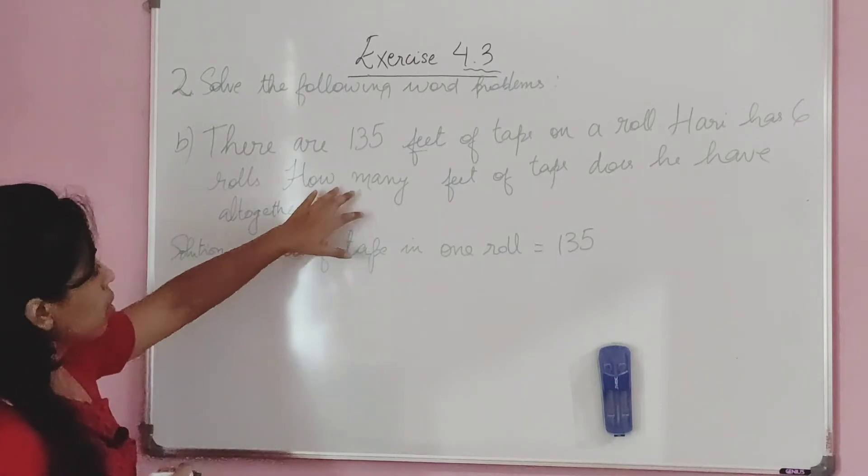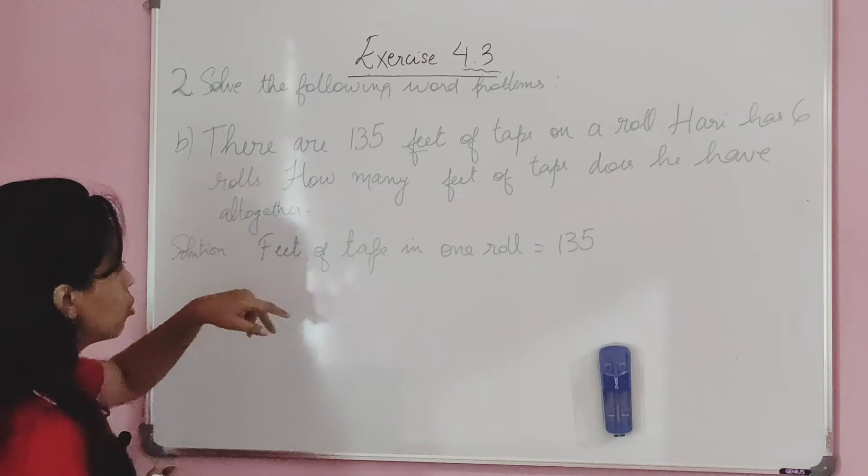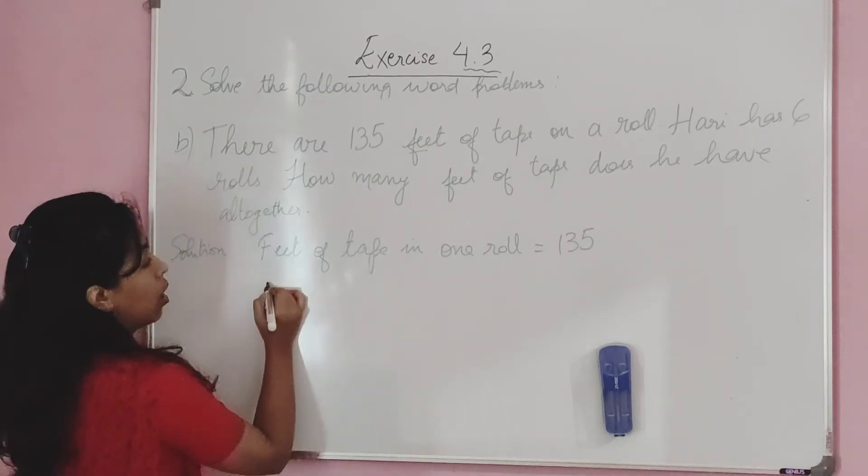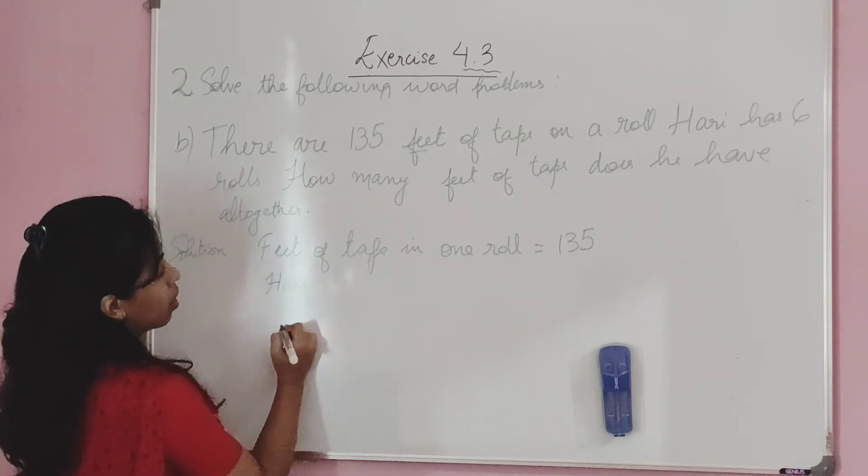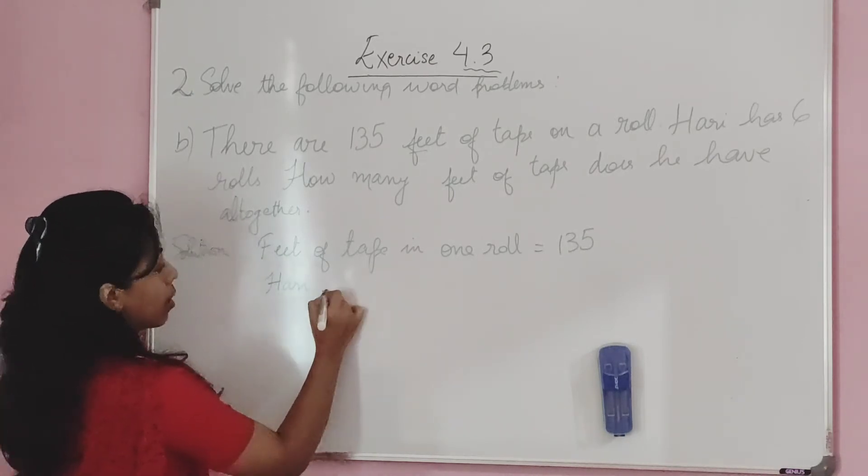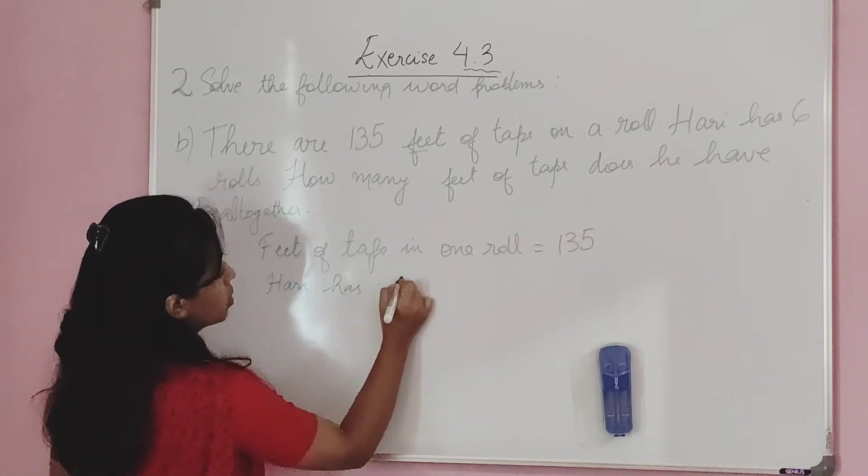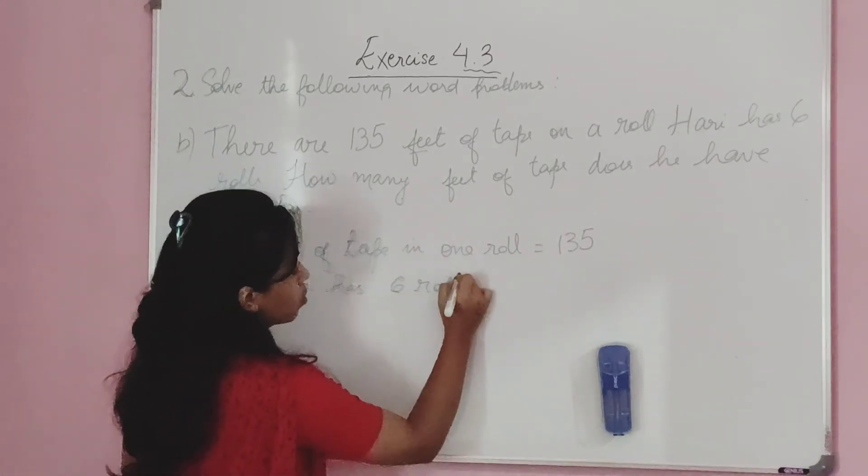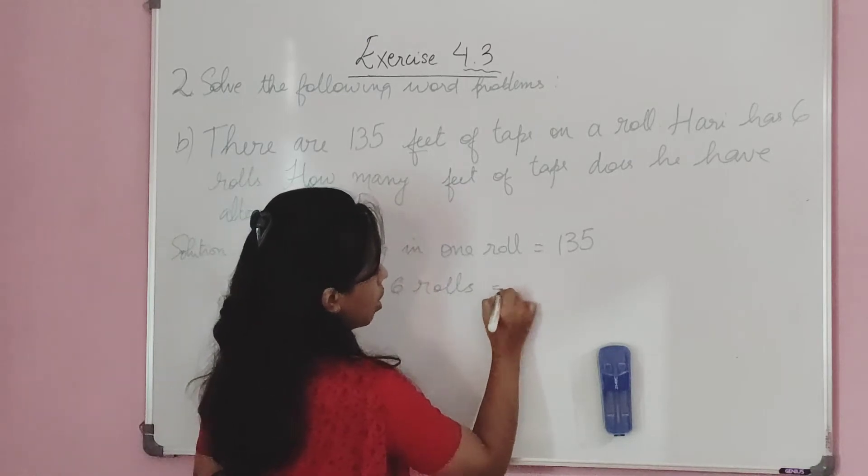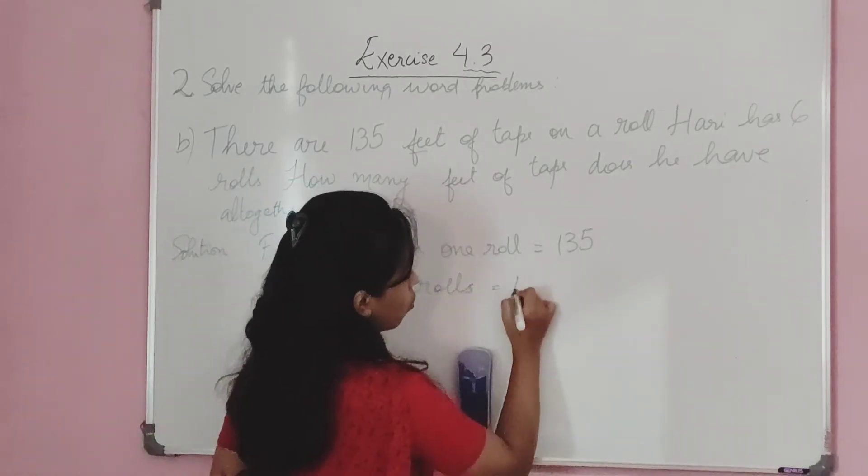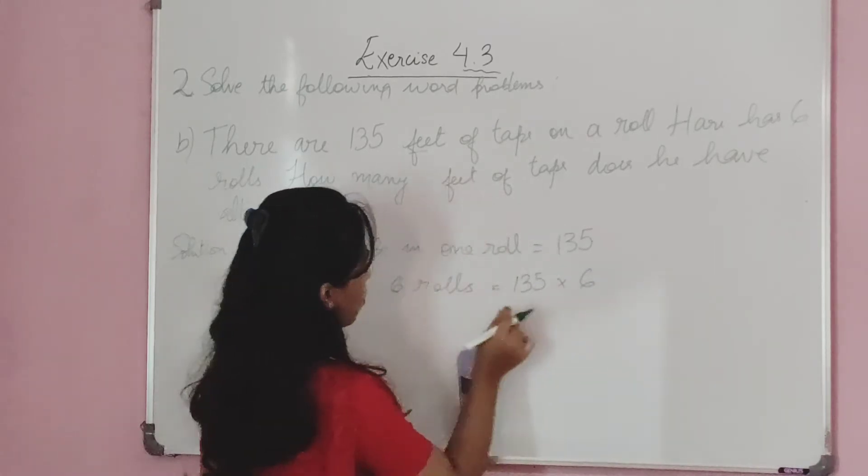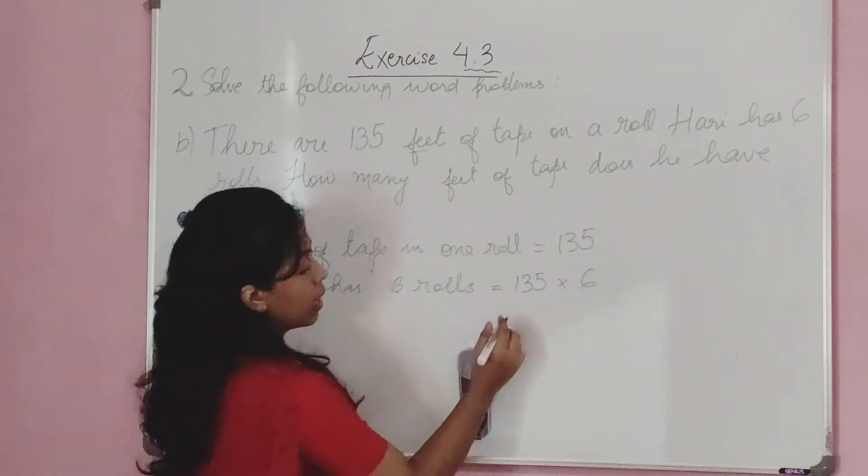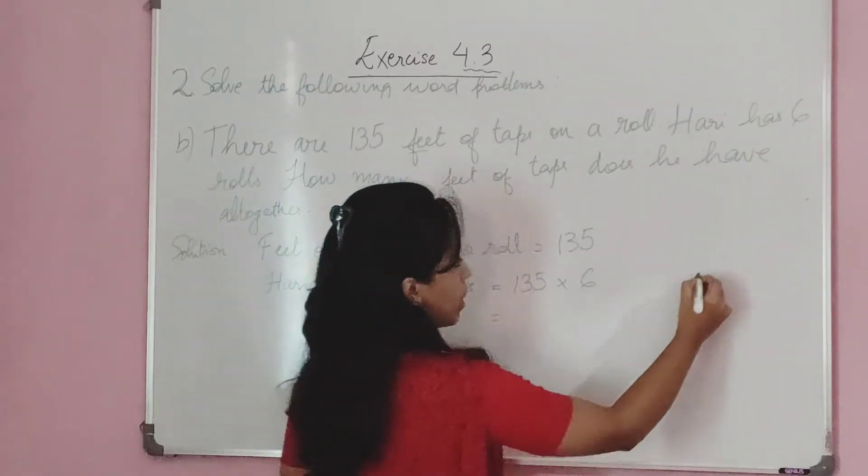How many feet of tape does Harry have all together? Harry has 6 rolls. If we have 6 rolls, we need to multiply. We can multiply it as a roll.